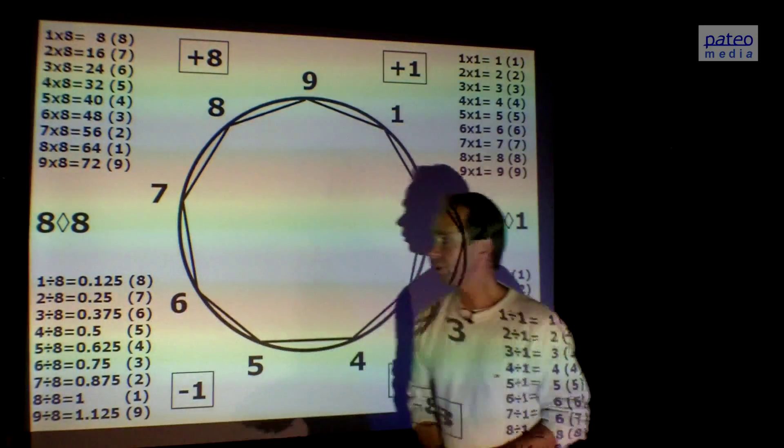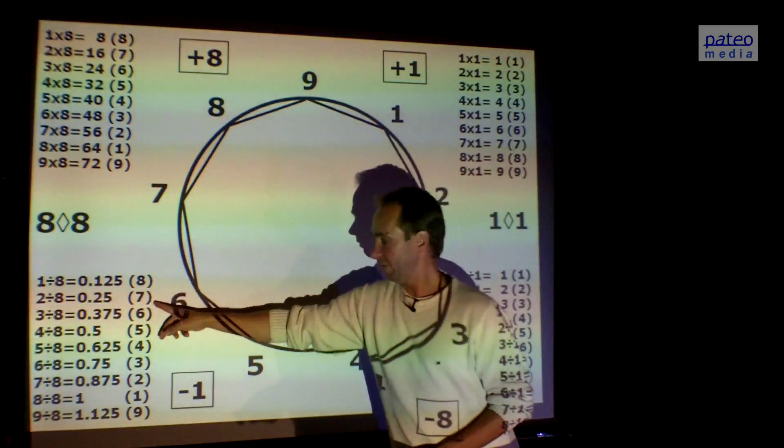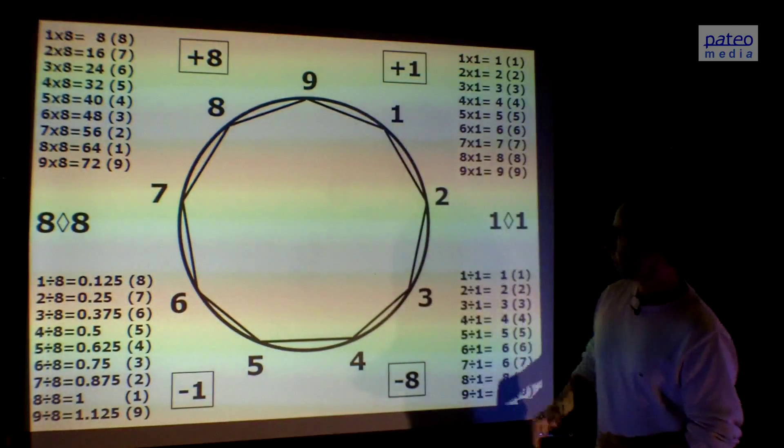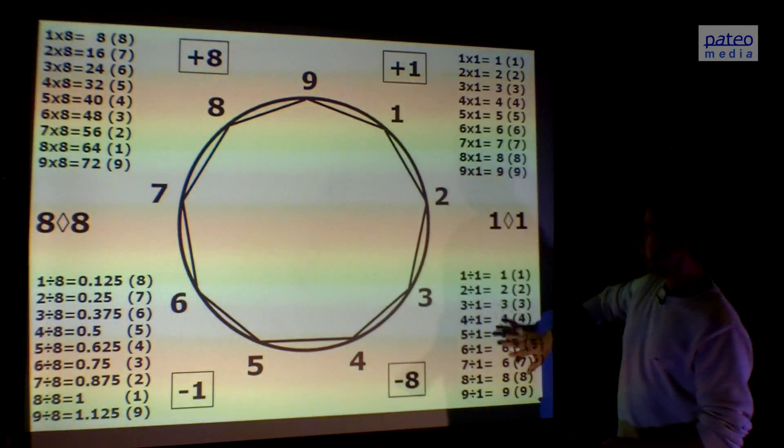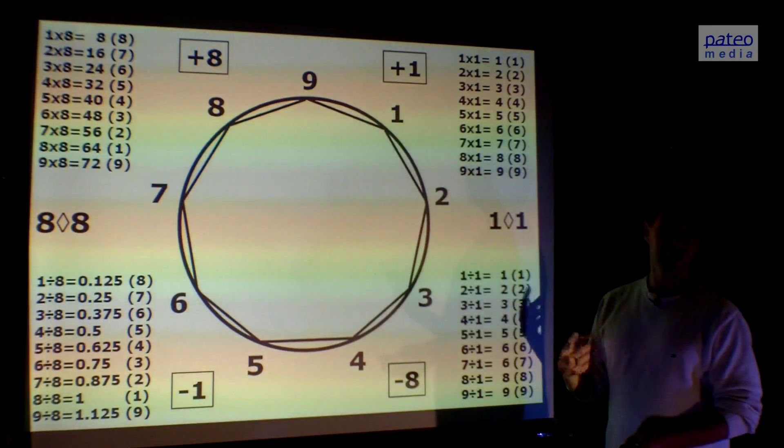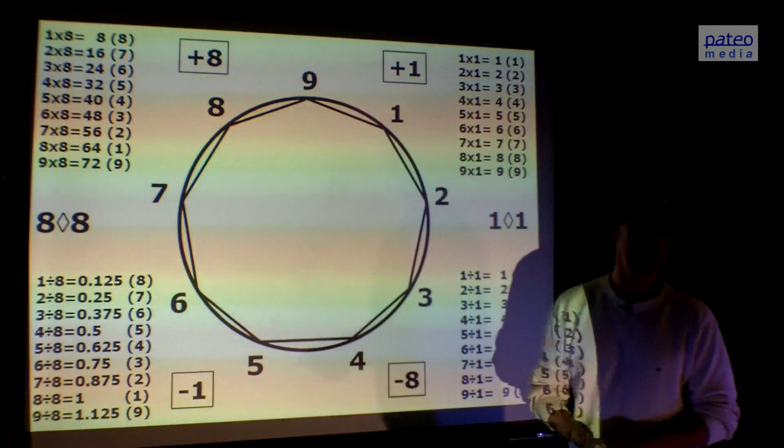When we look at the division table of eight, we see the same numbers again - eight, seven, six, and so forth. So it's the same rhythm. Because this is the same as this, we say that one is a reciprocal, that's a special term, reciprocal of one. And eight is the reciprocal of eight.